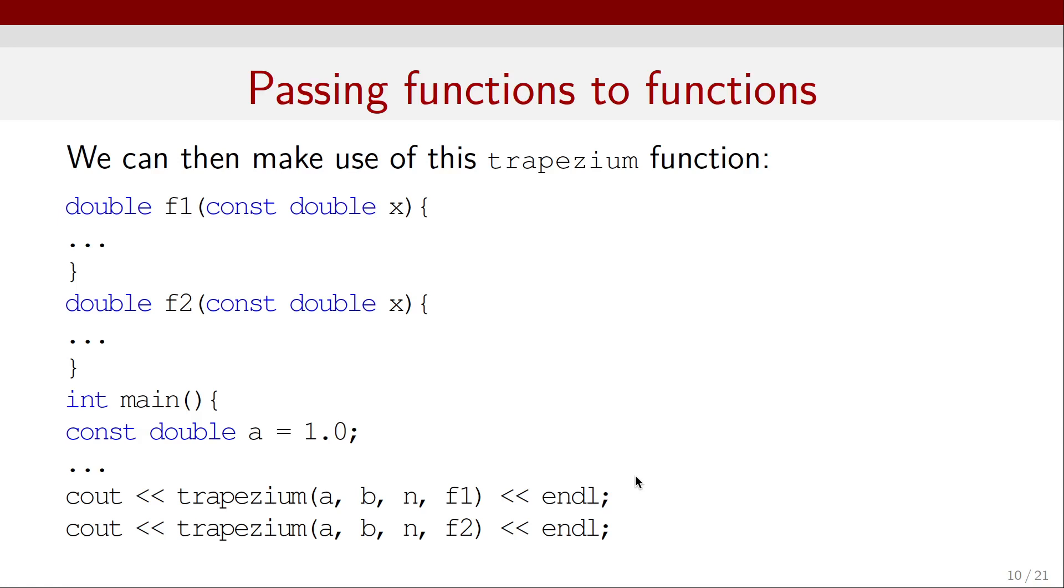That means if I have a trapezium program that integrates functions and it's fully debugged, then I don't need to debug it every time I use it. I can just pass a function to it and it will work every time. That makes it very convenient to reuse code that we have written and debugged. And of course, it allows us to just write the code once and not have to rewrite it again and again for every function that we want to integrate.